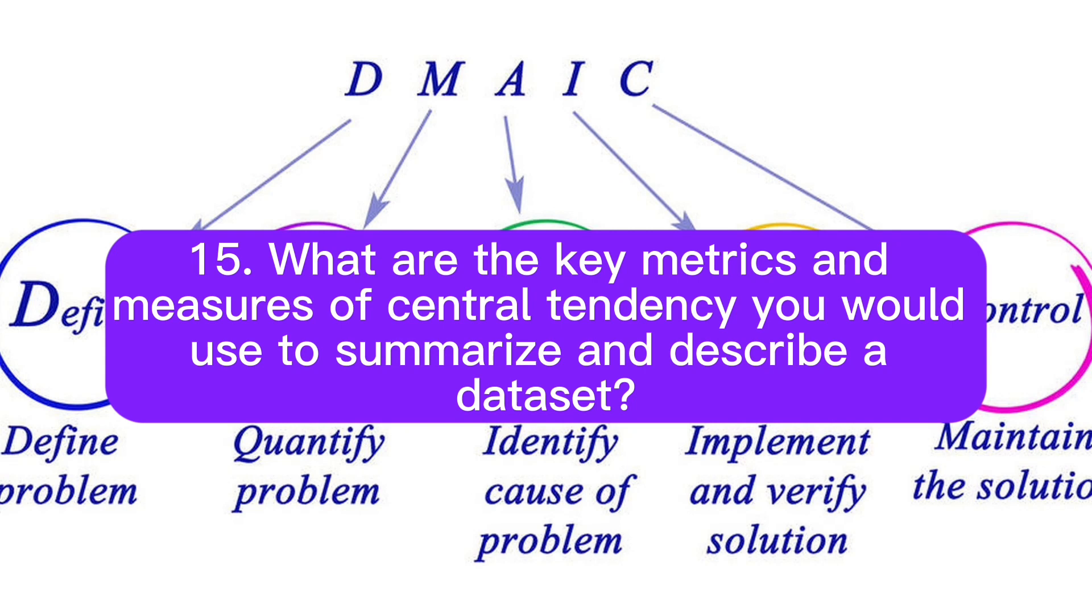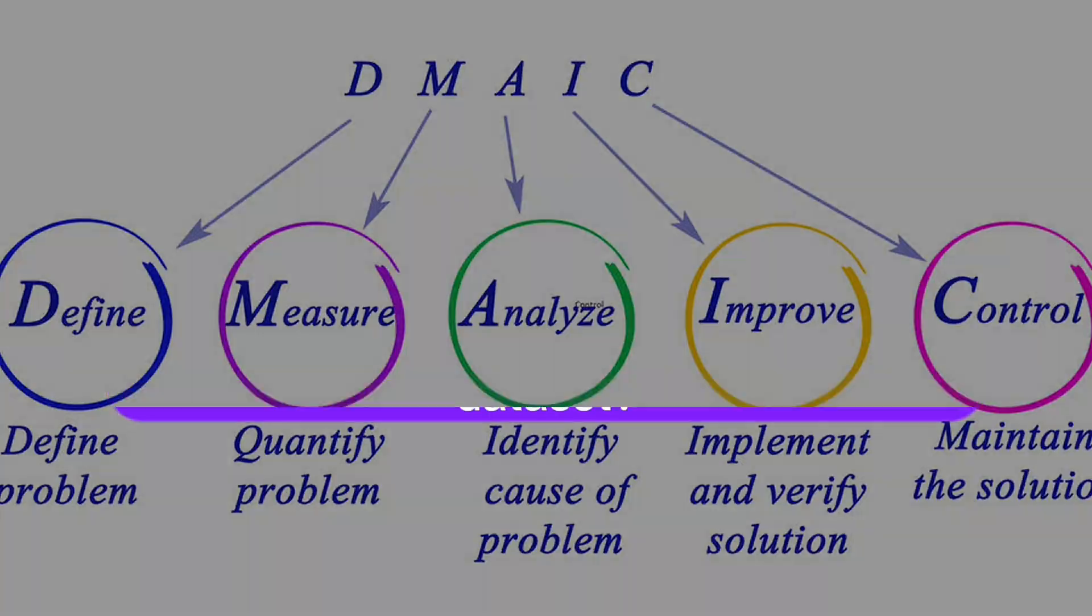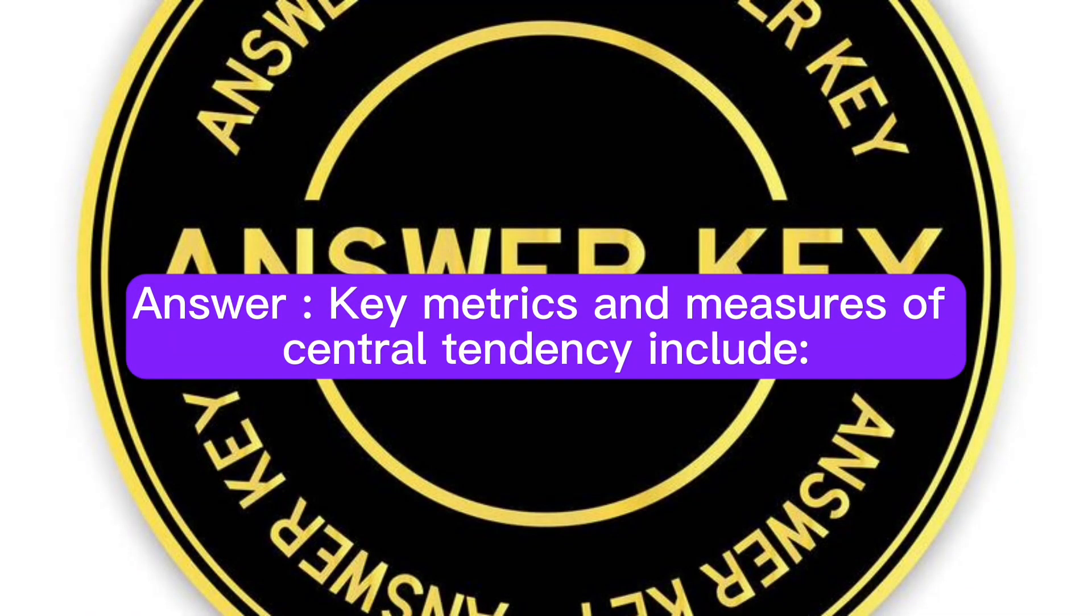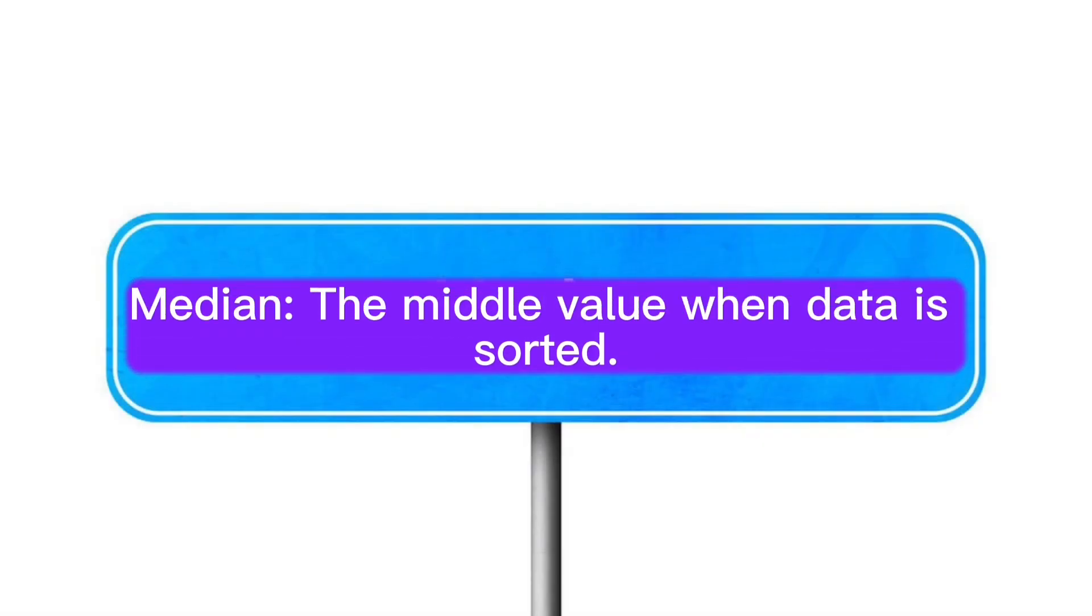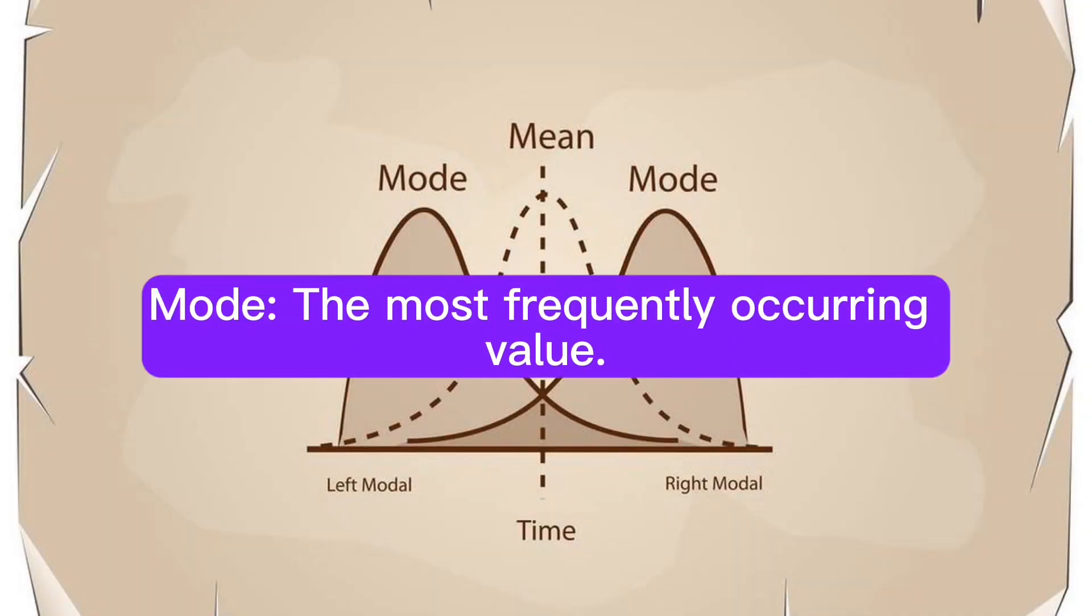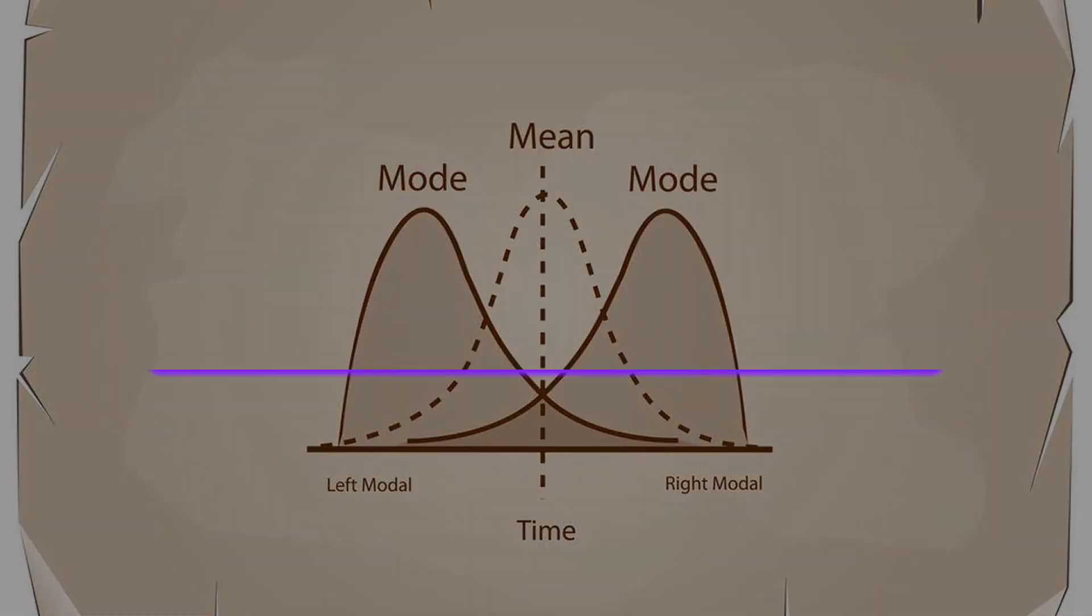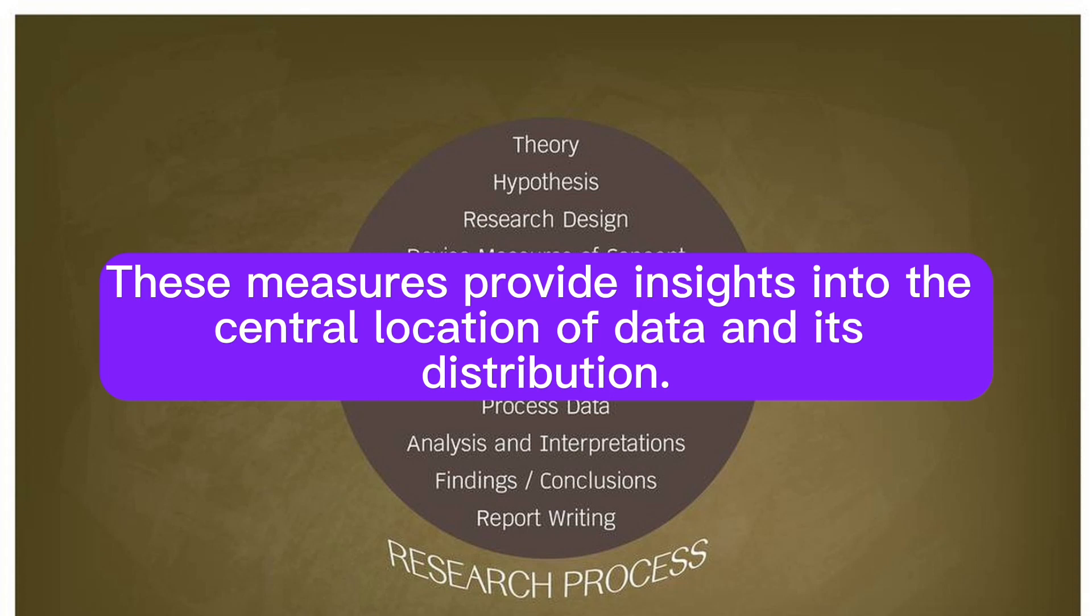Question 15: What are the key metrics and measures of central tendency you would use to summarize and describe a dataset? Answer: Key metrics and measures of central tendency include mean, the average of the values; median, the middle value when data is sorted; and mode, the most frequently occurring value. These measures provide insights into the central location of data and its distribution.